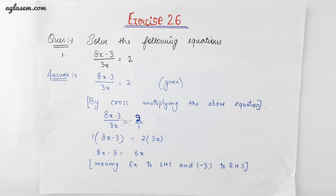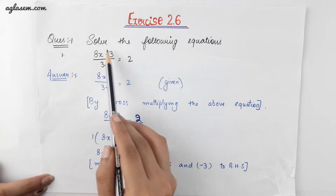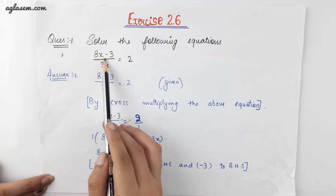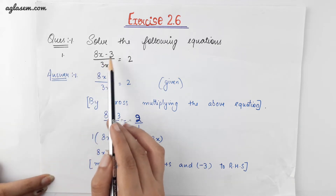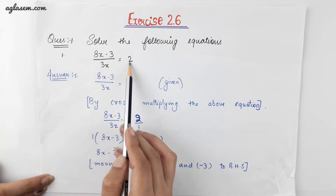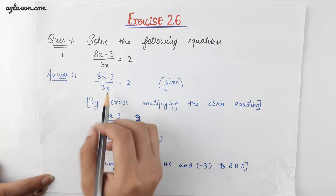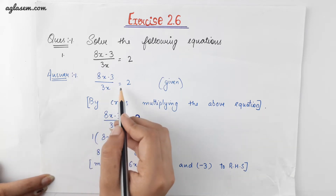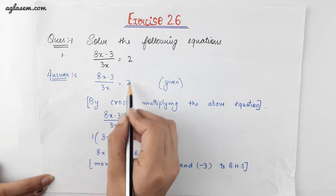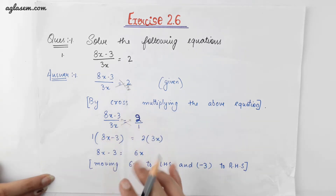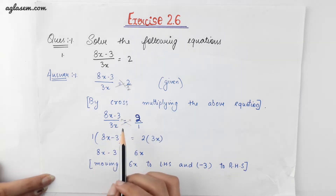Now let us begin with the first exercise. It says: solve the following equation. Number 1: (8x minus 3) divided by 3x is equal to 2. Here we have to find the value of x. We know that we can write 2 as 2 by 1. Now do the cross multiplication.